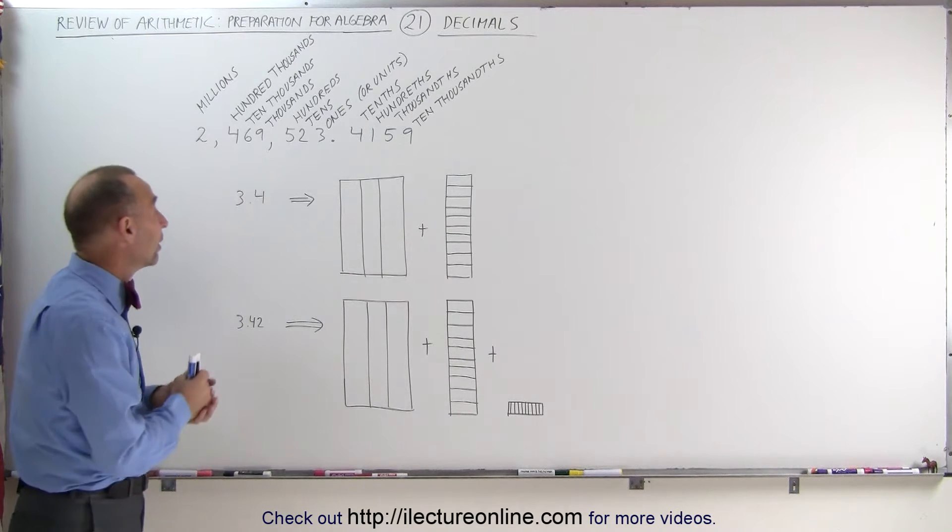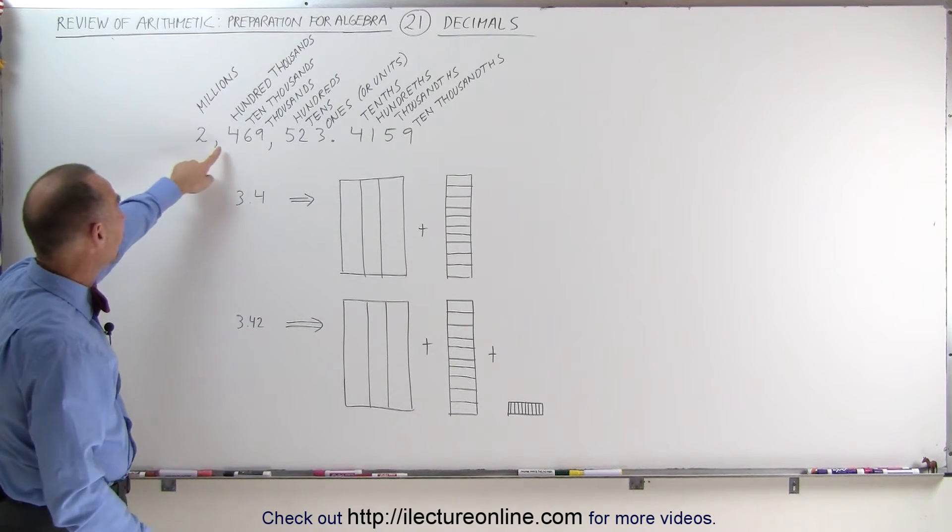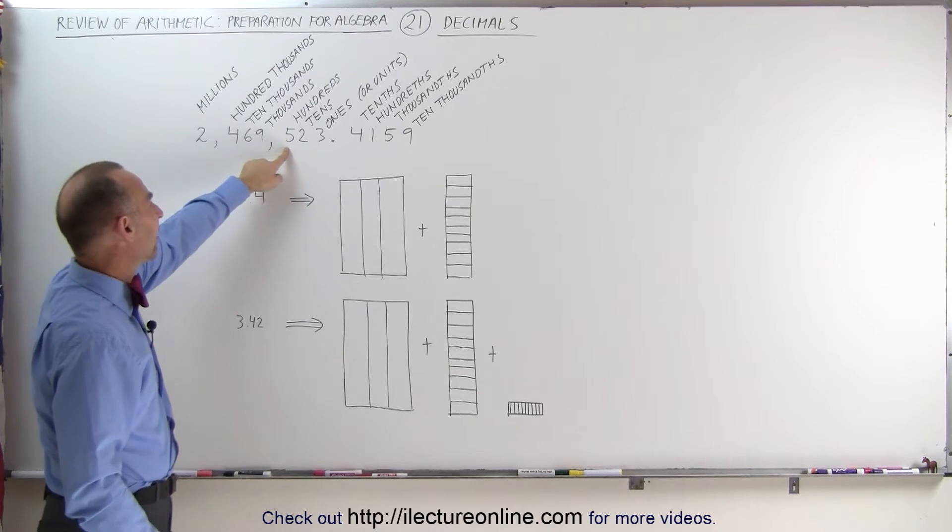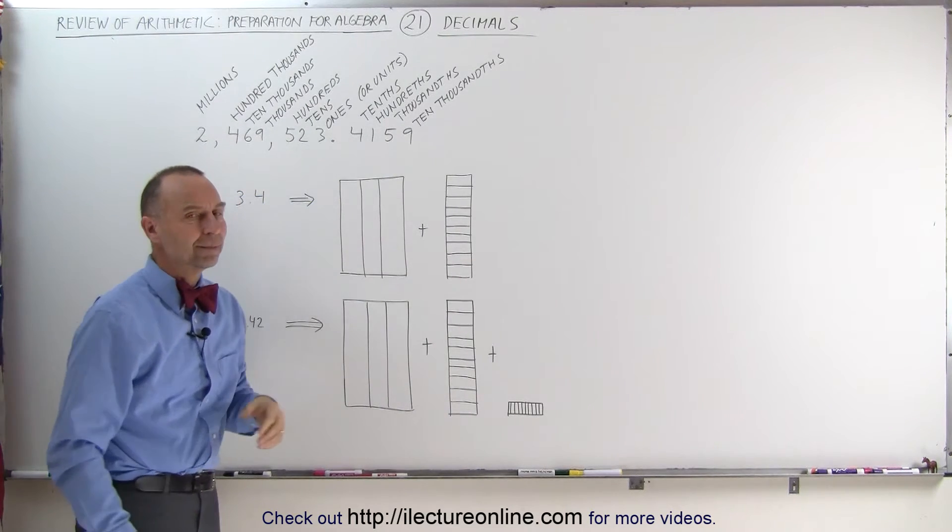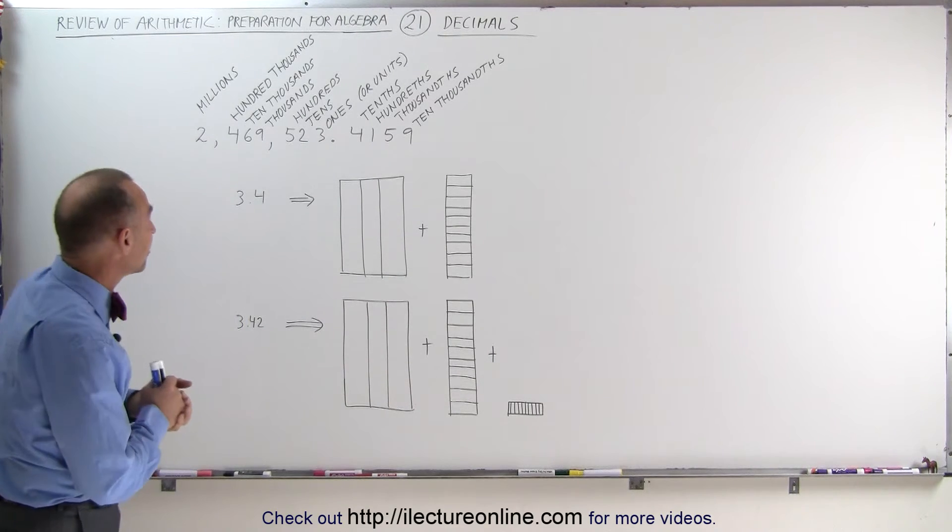Here before us, we have a pretty big number. It's 2,469,523, a decimal place, and then 4159. What do those numbers mean?